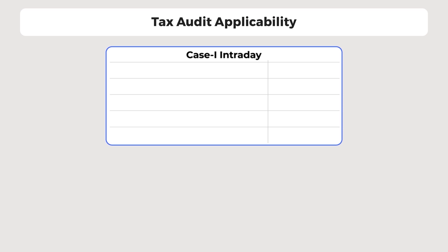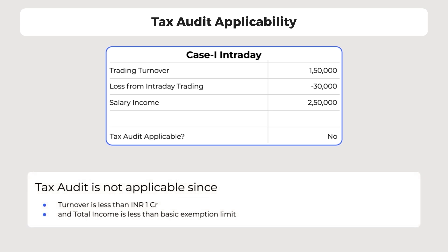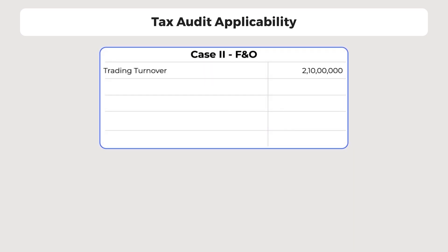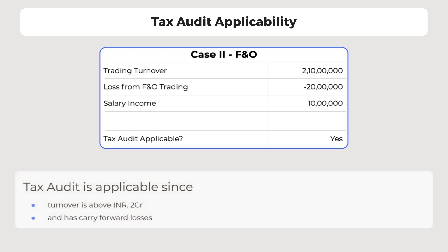Let's look at a few cases. For an intraday trader with a trading turnover of 1,50,000 for FY 2019-20, the trader incurred a loss of 30,000 and earned a salary of 2,50,000. In this case, tax audit is not applicable since the trading turnover is less than 1 crore and total income is less than the basic exemption limit. In another case of an F&O trader with a trading turnover of 2 crore 10 lakh for FY 2019-20, the loss is 20 lakh and the trader earned a salary of 10 lakh. Tax audit is applicable since the trading turnover is more than 2 crore and there are carry-forward losses.